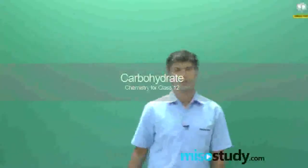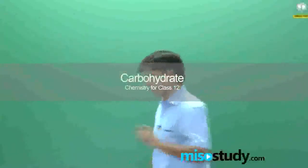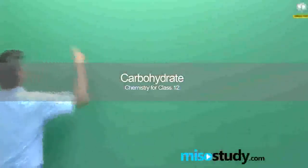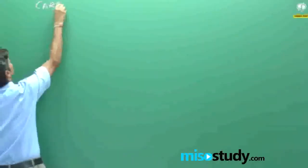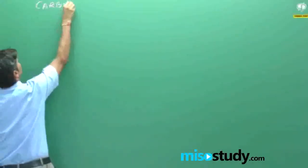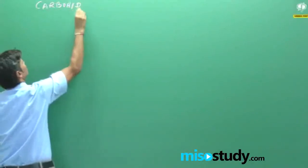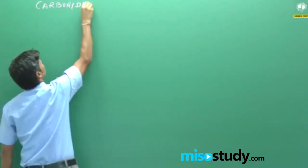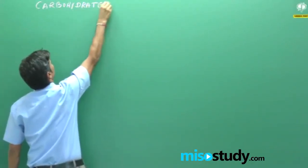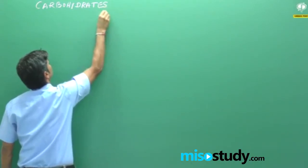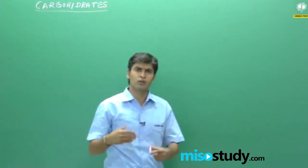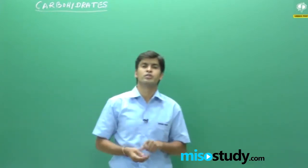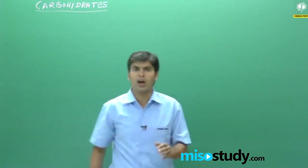Today we will start with the chapter on carbohydrates. In this chapter we will learn what glucose, fructose, cellulose, and sucrose are and how they are formed.